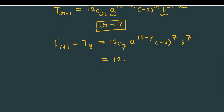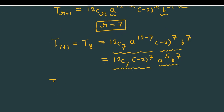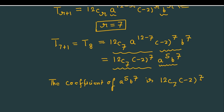We can simplify and write this as 12C7 multiplied by (-2) raised to the power 7, then a raised to the power 5 and b raised to the power 7. So the coefficient of a raised to the power 5 into b raised to the power 7 is 12C7 into (-2) raised to the power 7. You can further simplify this if needed, or leave it in this expression as the final answer.